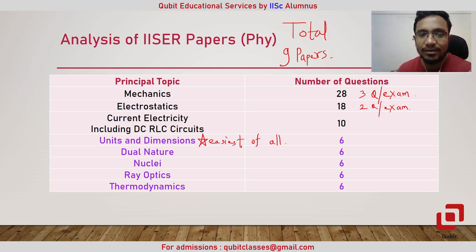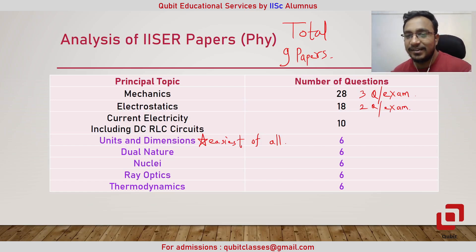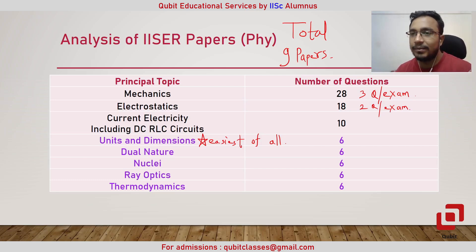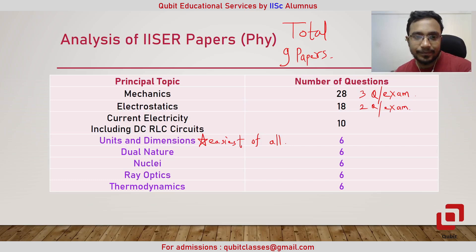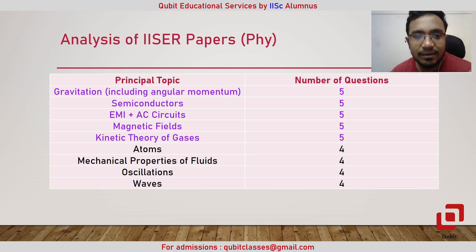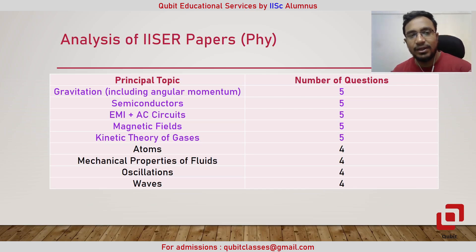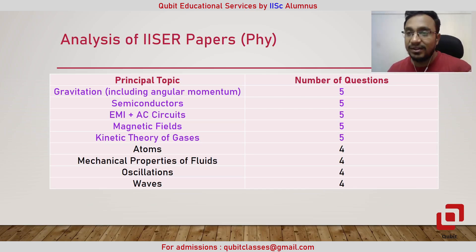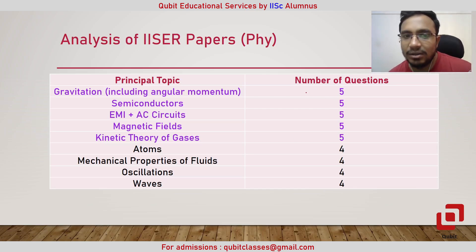Ray optics is totally different from nuclei. Maybe nuclei and dual nature can be considered to belong to modern physics, but weightage-wise they fall in the same bucket. I have given separate mention for gravitation because it includes Newton's law of gravitation, orbital topics, satellites, Kepler's laws of motion, and potential energy.